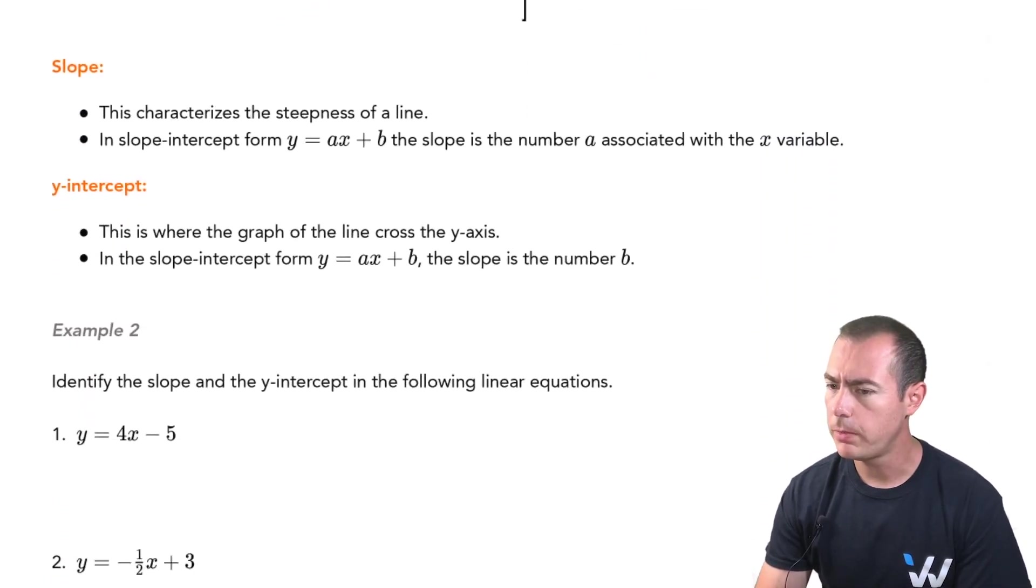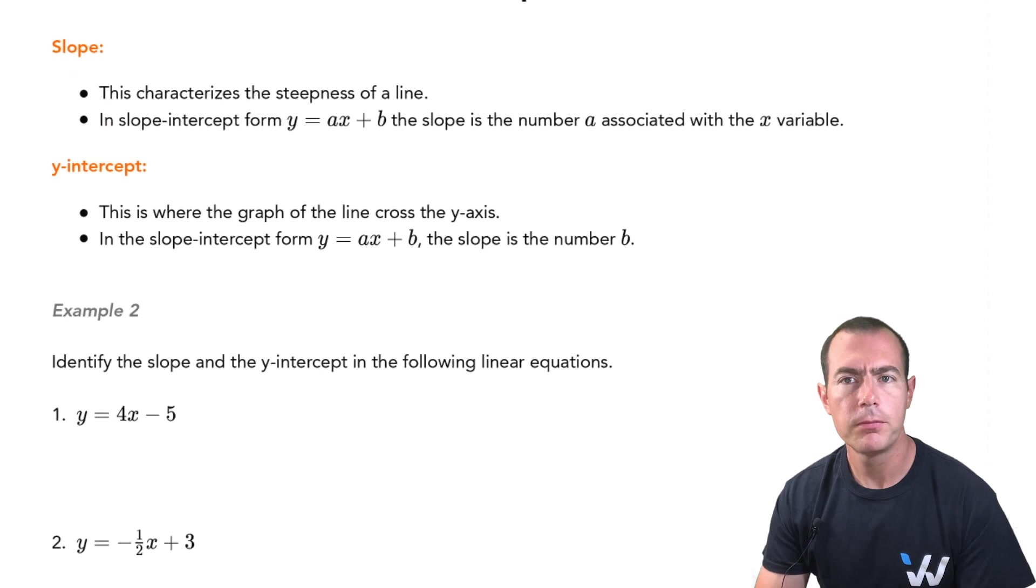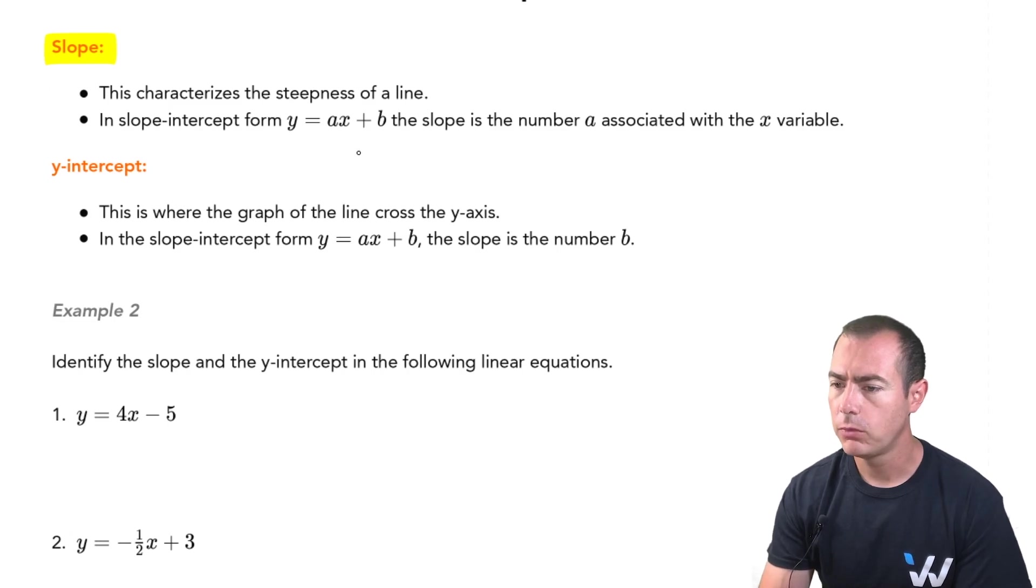So some things you want to know about their graph, there's a couple of good properties for these linear equations. The first is their slope. The slope is really a characteristic of how steep that line is. And when it's written in the slope intercept form, that's really going to be the value of a sitting right next to the x. So that gives you a good sense of how steep it is. The larger the value of a is, the steeper that line will be.